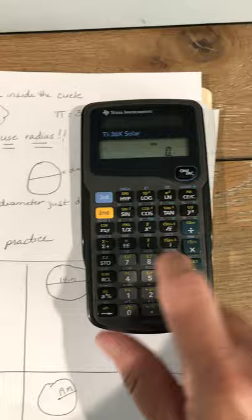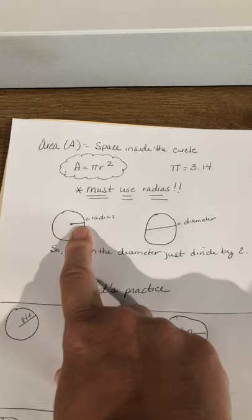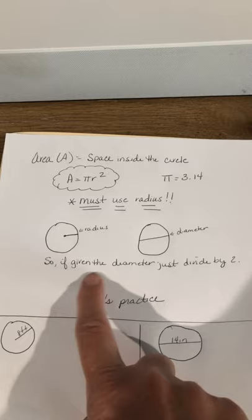Now one thing I need you to notice is you have to use the radius. You don't have a choice. Now let's just review. Remember radius is the distance halfway across the circle, and the diameter goes all the way across. So if they give you the diameter, you just have to divide by 2. You've got to remember this is very, very important.